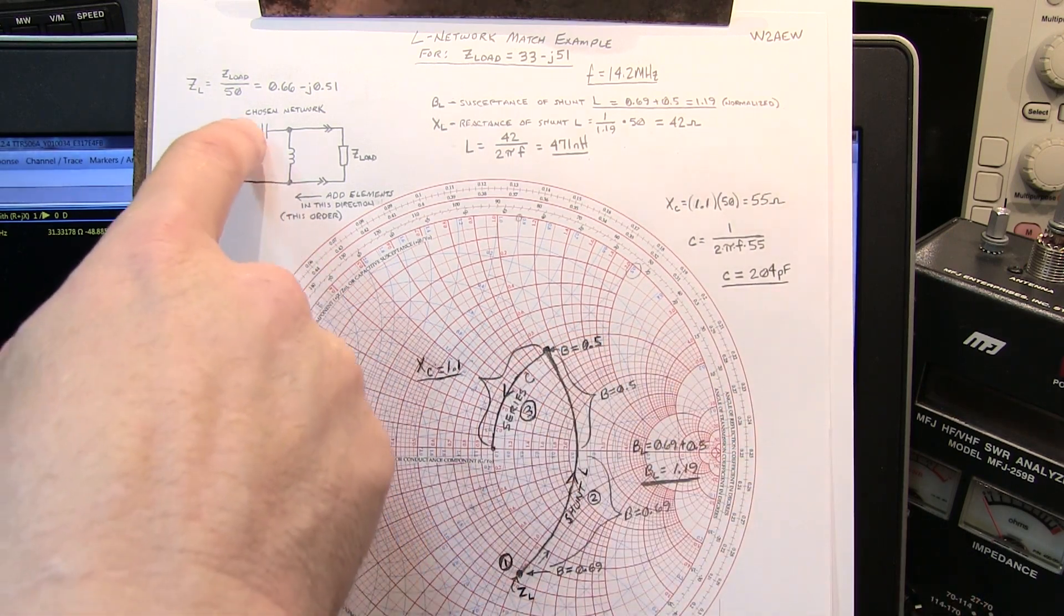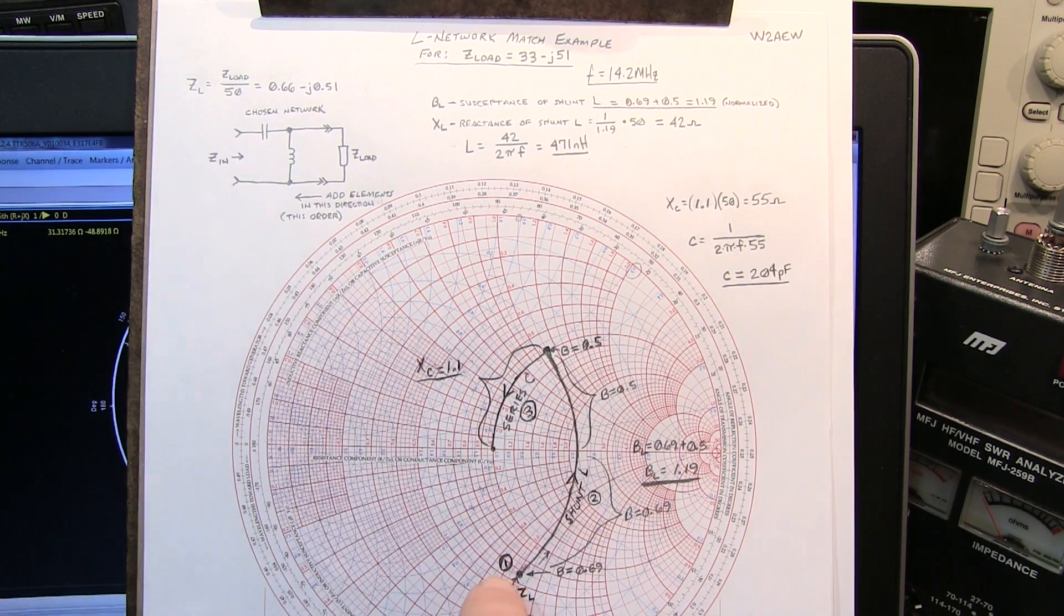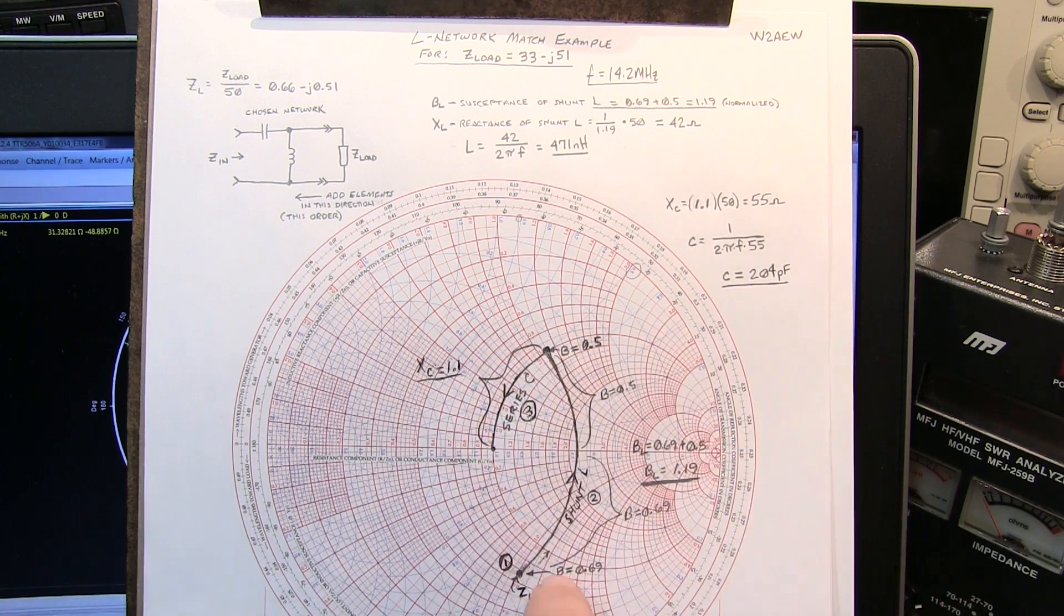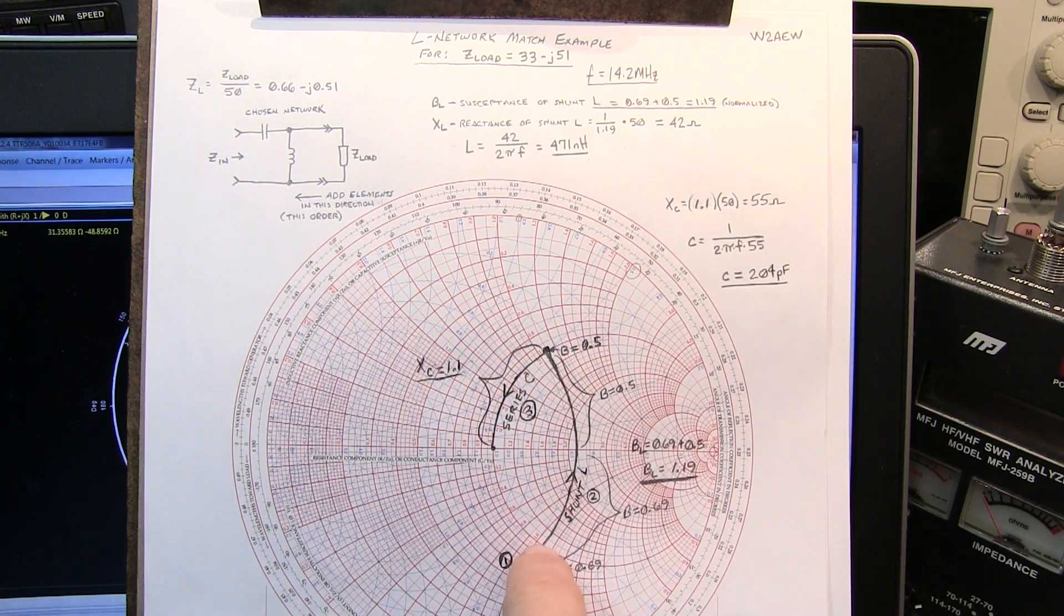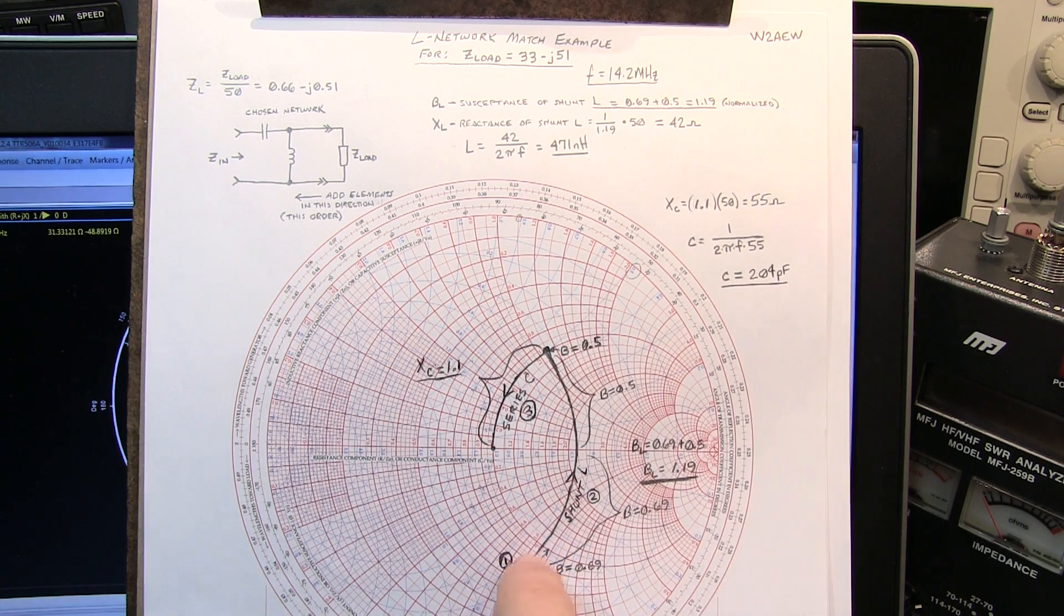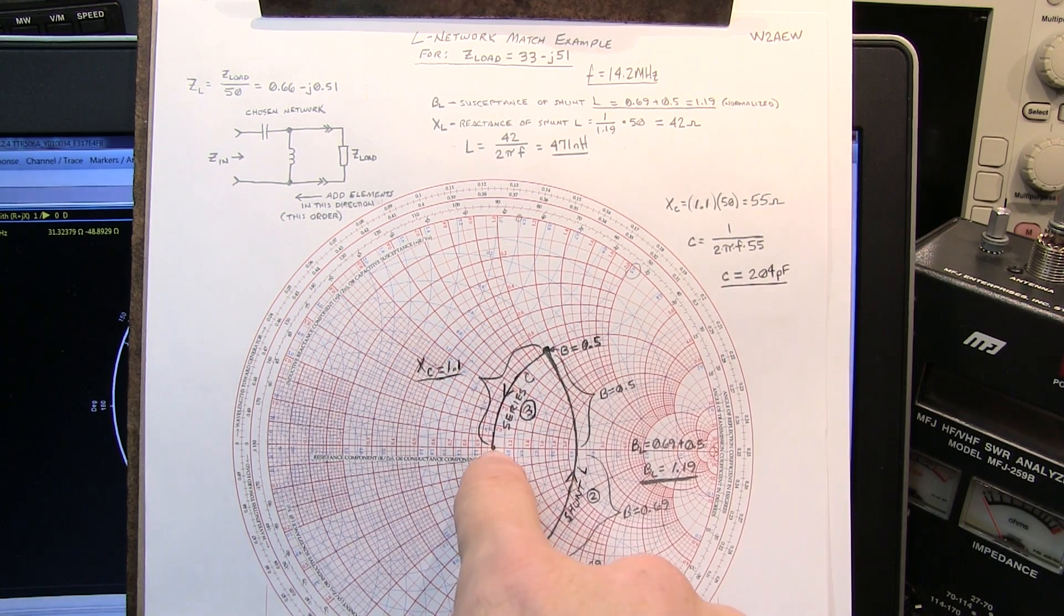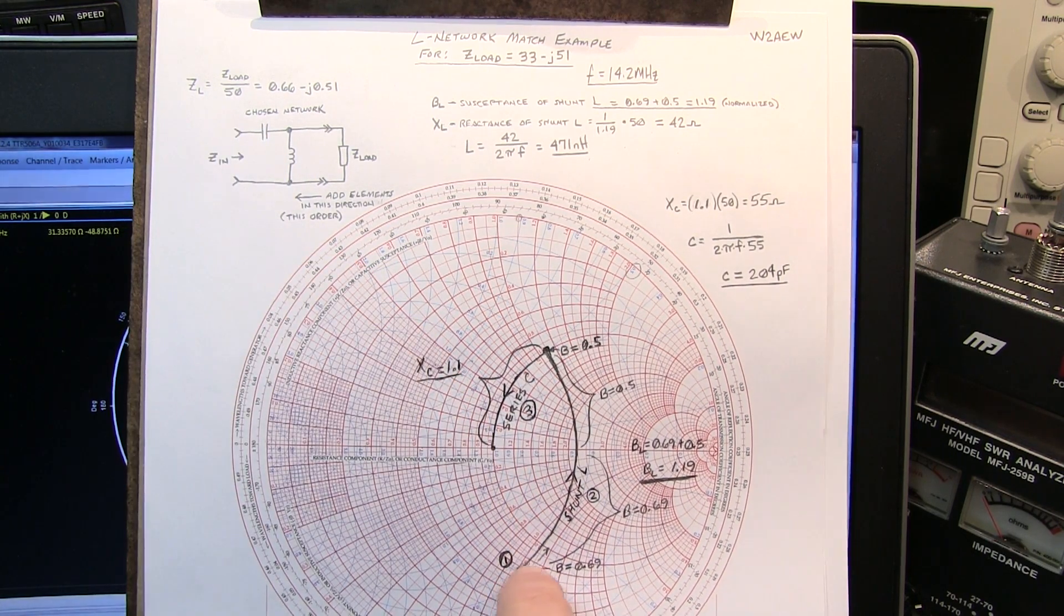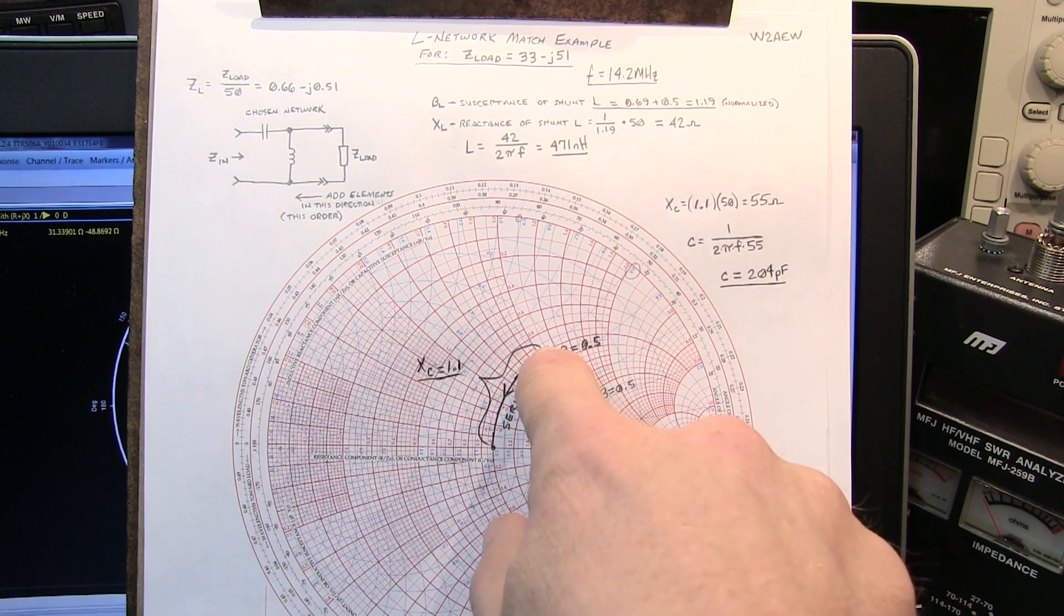Now I also want to do it with a series capacitor. So if I rotate up here, the first place I hit that unity resistance circle is right here. So I could rotate up here and then rotate that way to get to the center, but that would mean adding a shunt L and a series L. I actually want to do a shunt L and a series C. So we're going to rotate up from here until we hit the unity circle up on this side.